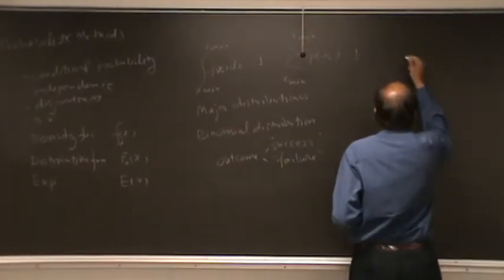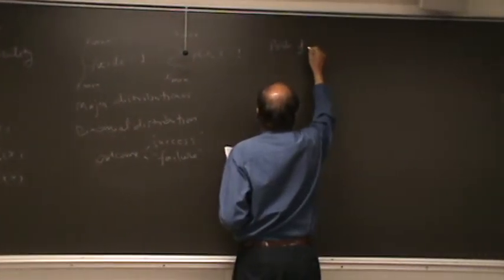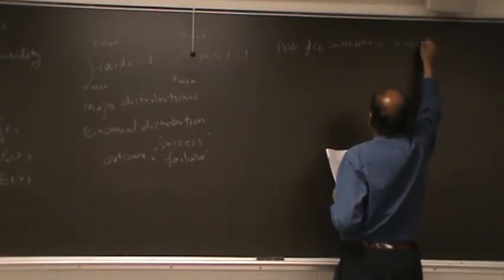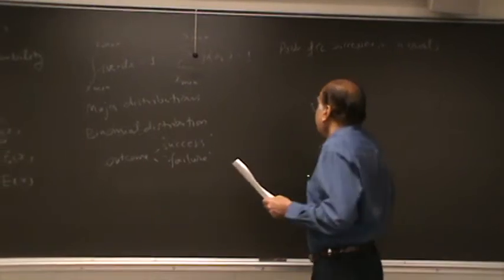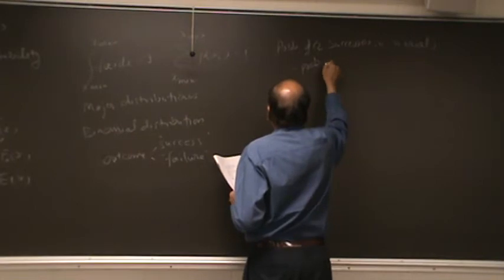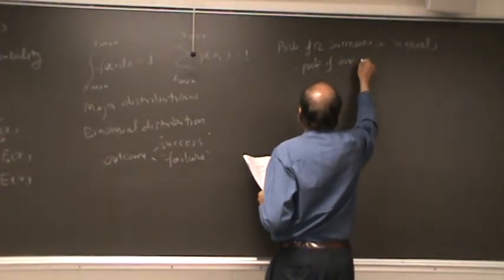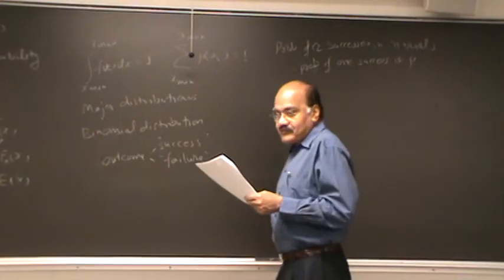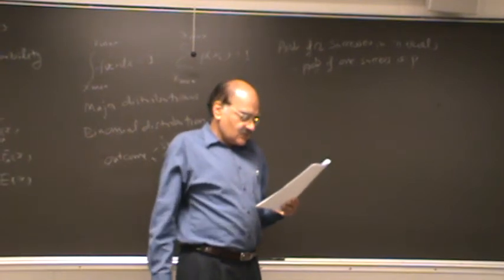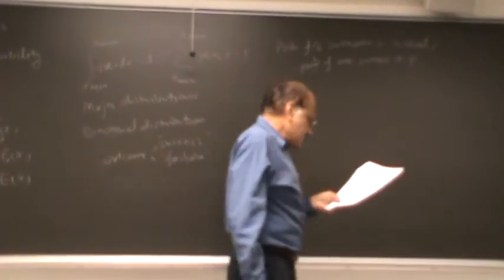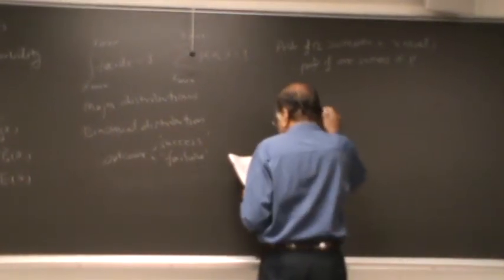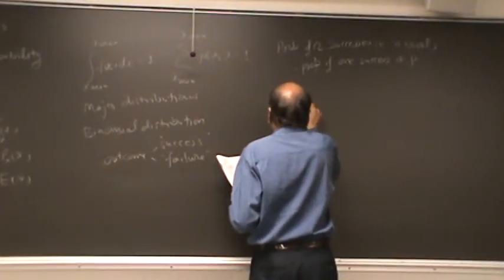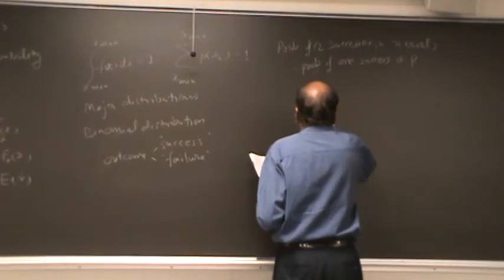Let us move here. Probability of r successes in n trials. Let us obtain an expression for this. And let us assume that probability of one success is lowercase p. Then what is the probability if you try it n times, r times out of n is going to be a success. And we could indicate it this way.